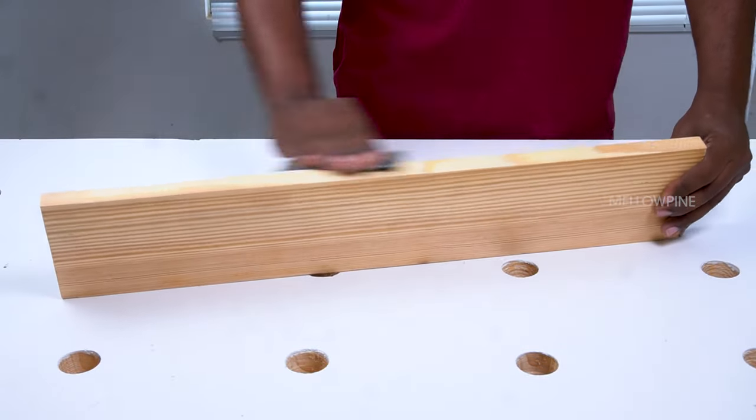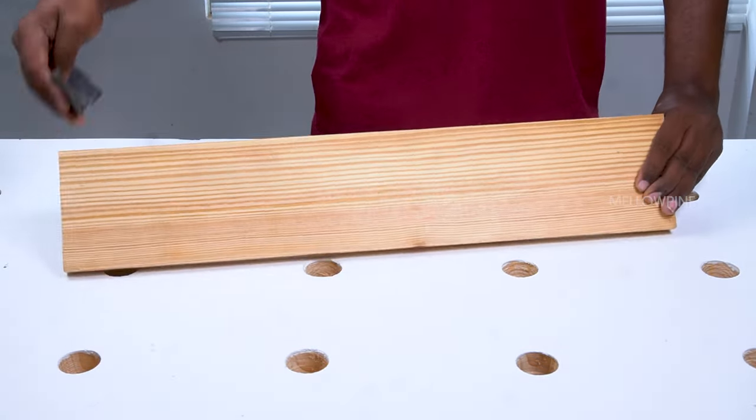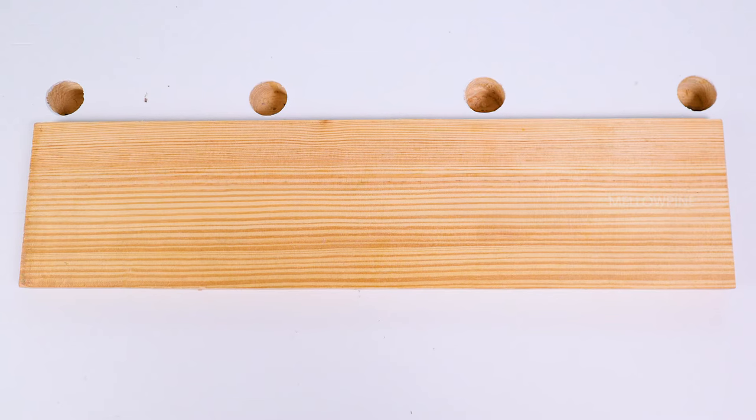Generally, a rip cut with a jigsaw will be less smooth compared to one with a circular saw. With this, you have successfully completed ripping lumber with a jigsaw.